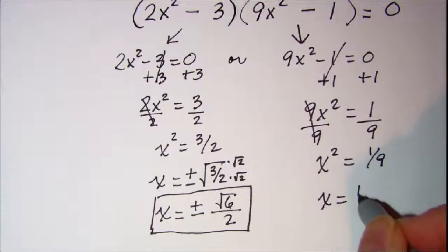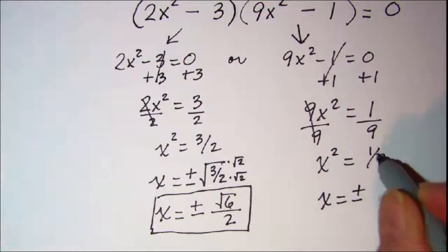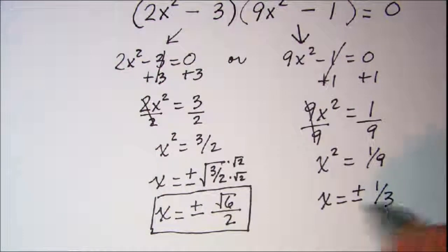So x is equal to plus or minus the square root of 1 ninth is 1 third. So here's my other two solutions and we're finished.